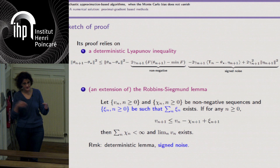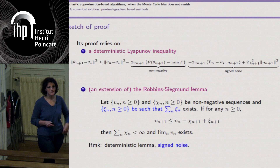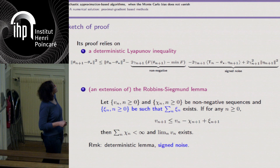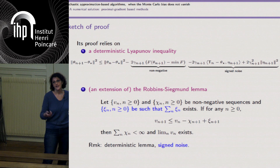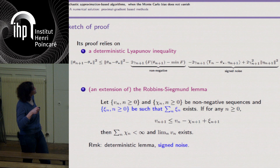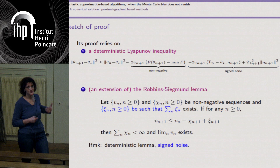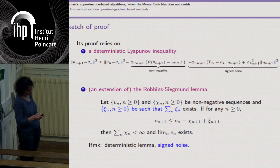The proof uses the fact that the proximal gradient algorithm is a descent algorithm with a natural Lyapunov function: at iteration n+1, the Lyapunov function is lower than at iteration n, with a rate of decay. When you introduce a perturbation, you get an additional signed term that can either improve or remove the decay aspect of the algorithm.